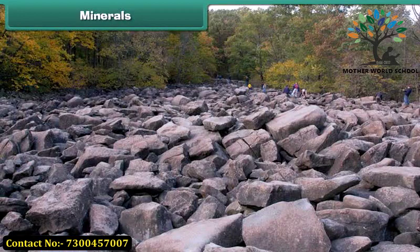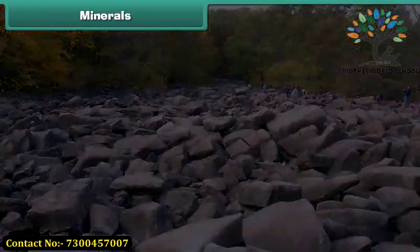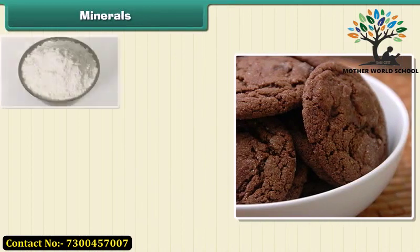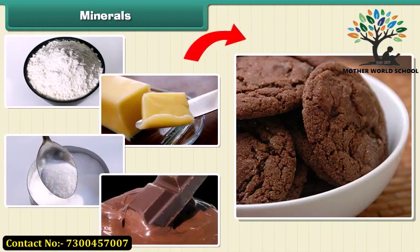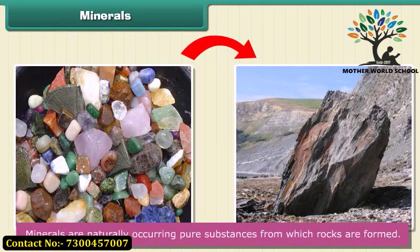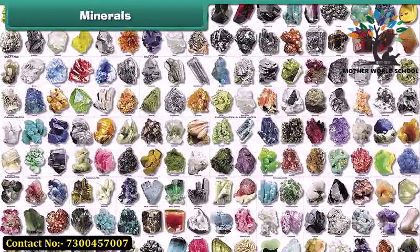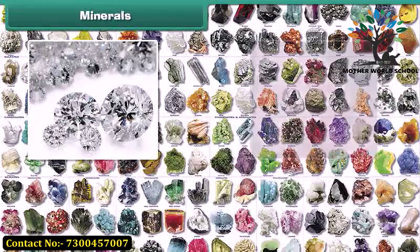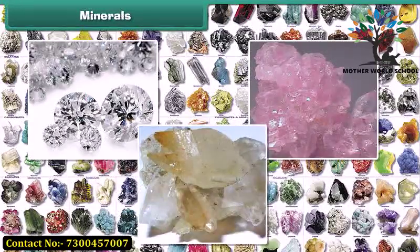Minerals. We have learnt about rocks. All rocks are made of minerals. Think of a chocolate cookie as a rock — the cookie is made of flour, butter, sugar, and chocolate. The cookie is like a rock, and the flour, butter, sugar, and chocolate are like minerals. Thus, minerals are naturally occurring pure substances from which rocks are formed. There are about 3,000 different minerals in the world, among which diamond is the hardest mineral. Quartz and calcite are two common examples of minerals.